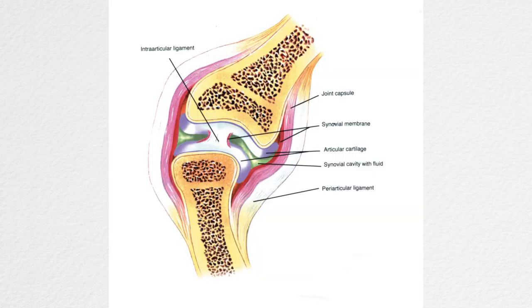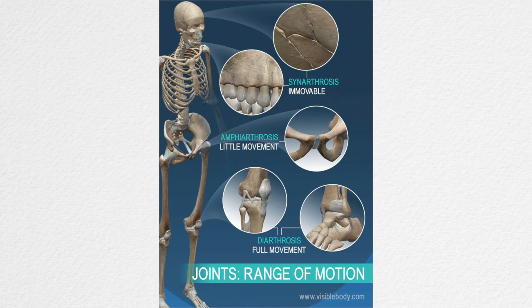Joints allow two or more bones to connect in our body. However, there are three types of joints that are important to learn about. Immovable joints, or known as synarthrosis, function literally like their name — bones would not move at all with these joints. The joints between the first pair of ribs and sternum are immovable joints.